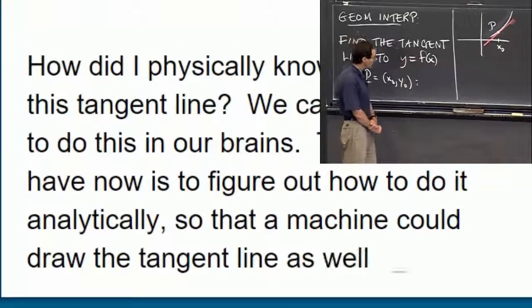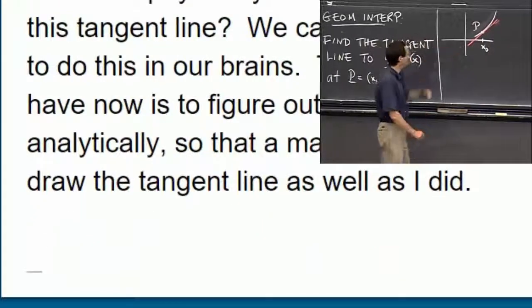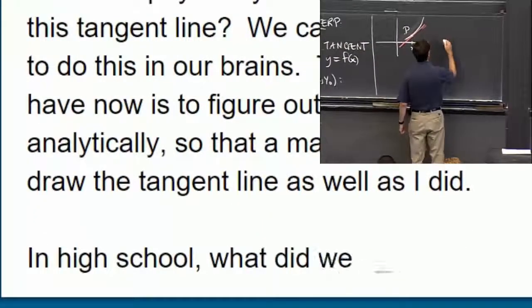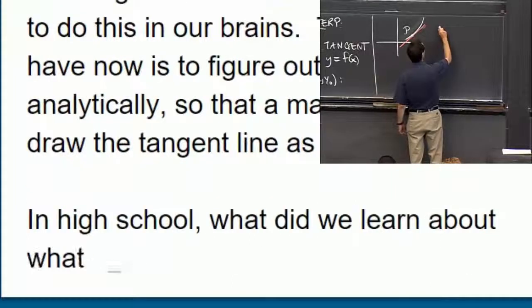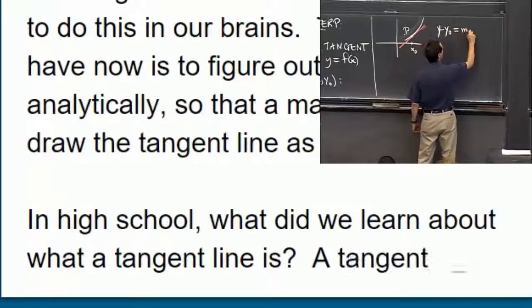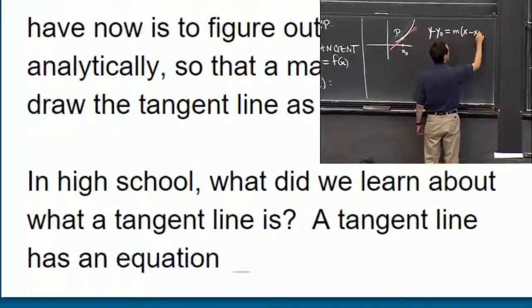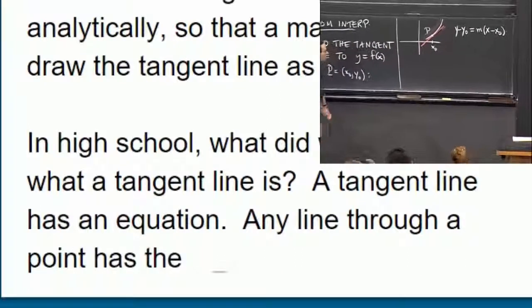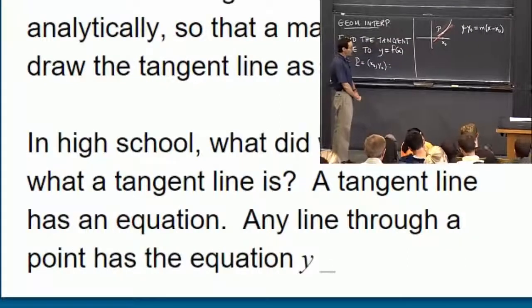So what did we learn in high school about what a tangent line is? Well, a tangent line has an equation. Any line through a point has the equation y - y0 = m(x - x0), where m is the slope.